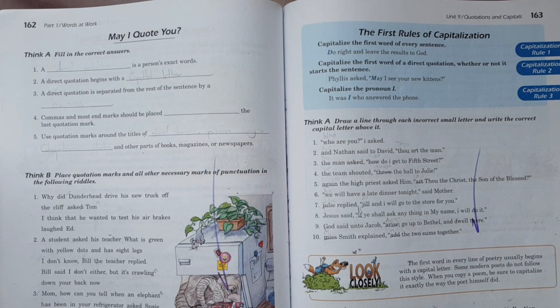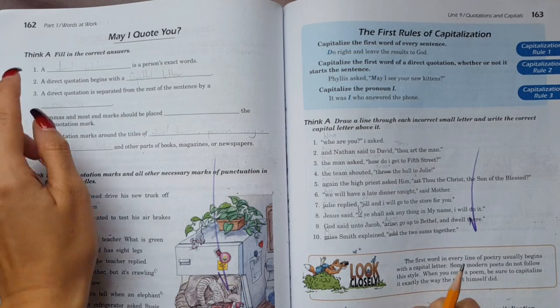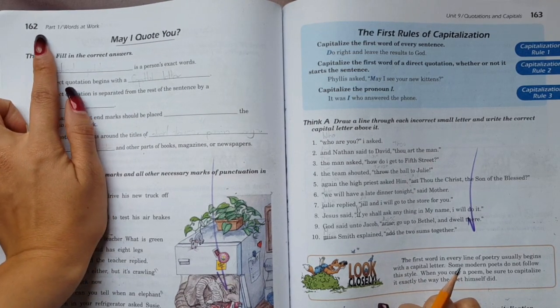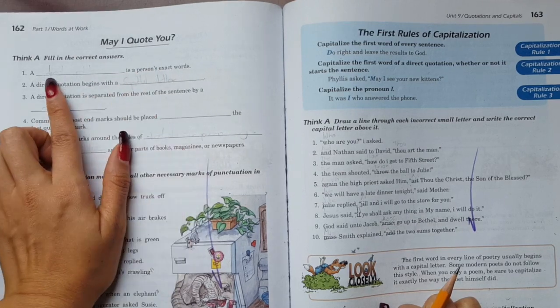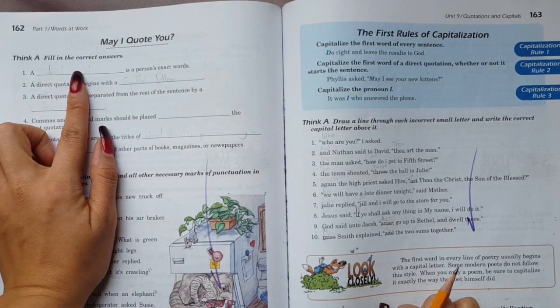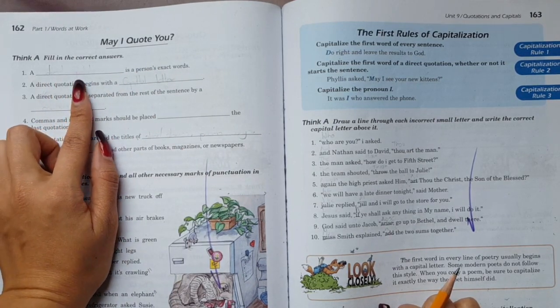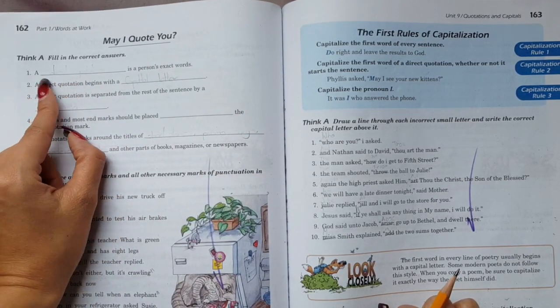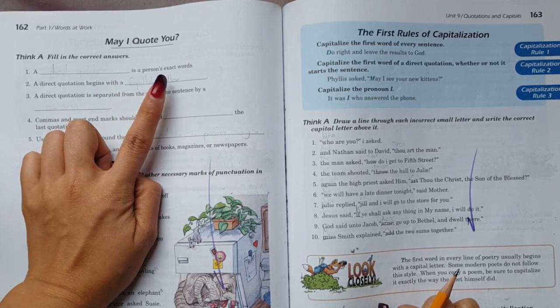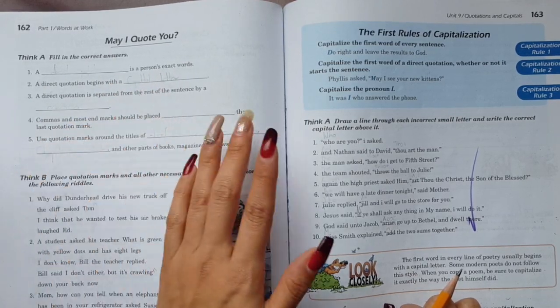Hi guys, today we are going to work on page 162. Here it says May I Quote You. We need to fill in the correct answers. Number one says a person's exact words. What are the exact words that a person says? How do we call them? Direct quotation.